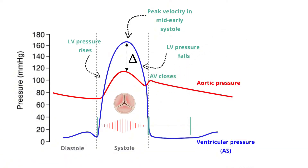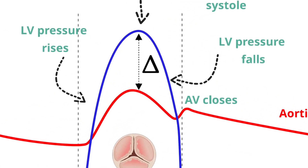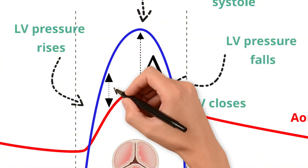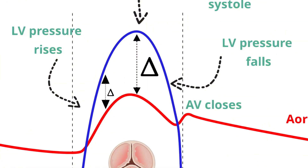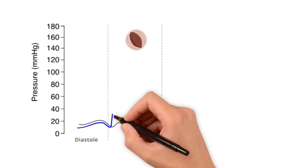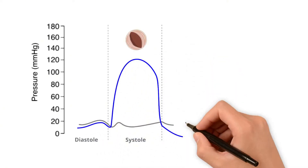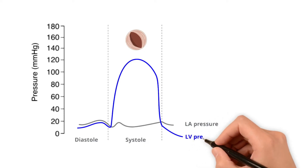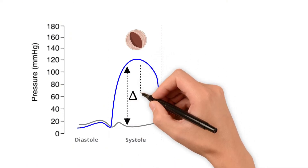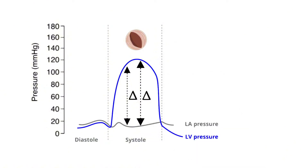Because the systolic pressure in the aorta is relatively high at around 120 mmHg, the magnitude of the gradient in mid-systole is much greater than that in early or late systole. By contrast, in pansystolic murmurs such as mitral regurgitation, the difference in pressure gradients between LV and LA is very similar throughout systole, hence creating a murmur of the same intensity throughout systole.